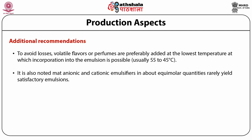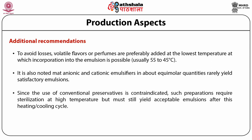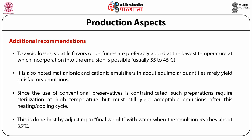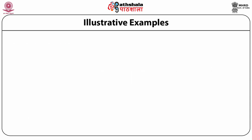Emulsions designated for parenteral administration can be prepared with a limited number of approved emulsifiers. For parenteral emulsions, especially those designed for intravenous injection, the product should be homogenized until a satisfactory particle size is achieved. Since conventional preservatives are contraindicated, such preparations require sterilization at high temperature. Whenever an emulsion is formed at elevated temperature, the loss of water due to evaporation must be made up by adjusting the final weight with water when the emulsion reaches approximately 35°C.